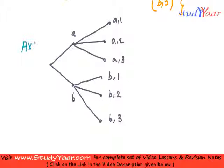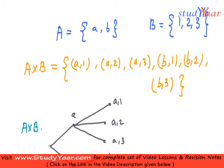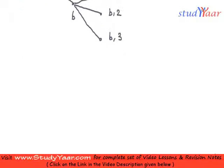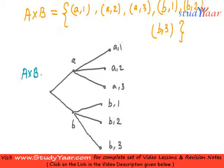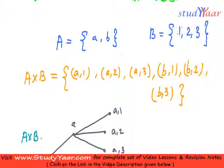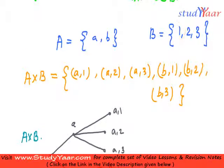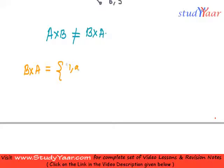Just understand one important thing: A cross B is not equal to B cross A. Let us see what we have in the Cartesian product of B with A. In B cross A, we start with B, so we take 1 and associate it with both b and a, giving us ordered pairs like (1, a), (1, b), and so on.